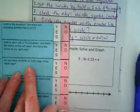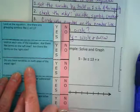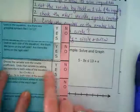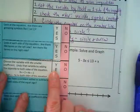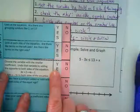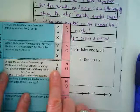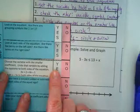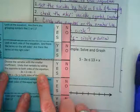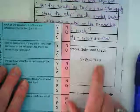Step three is do you have variables on both sides of the equal sign? Yes. What does yes say? Choose the variable with the smaller coefficient and undo that variable by adding to both sides of the equation, in this case the inequality.